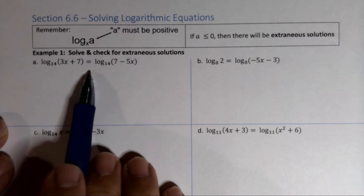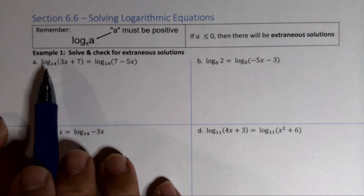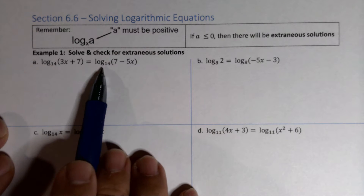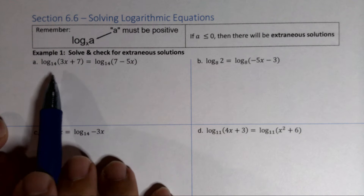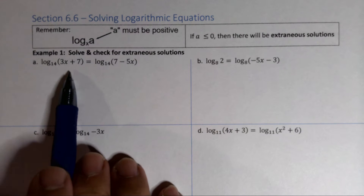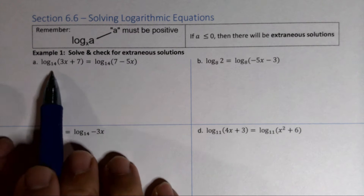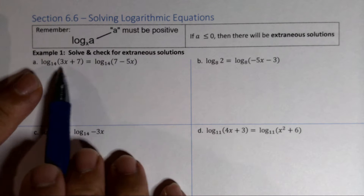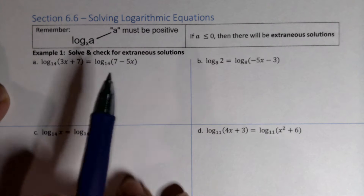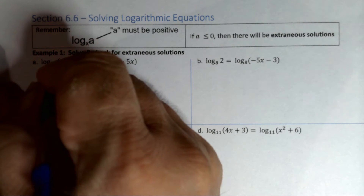When solving logarithmic equations, you'll see that there's a log on both sides. Once you have one log on the left and one log on the right of the equal sign and the bases are the same, you can just drop the logs and set the arguments equal to each other.